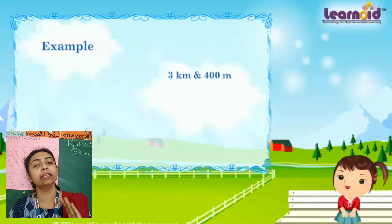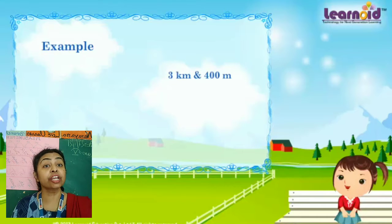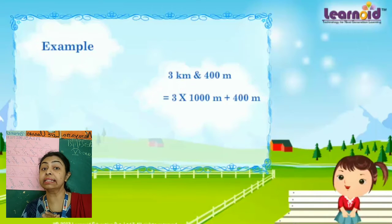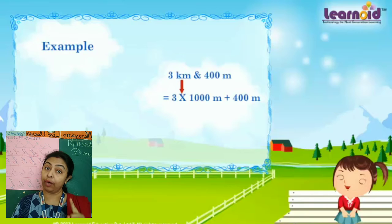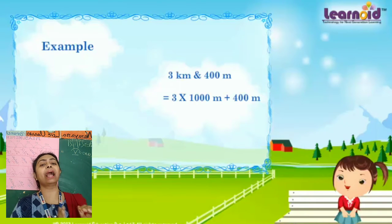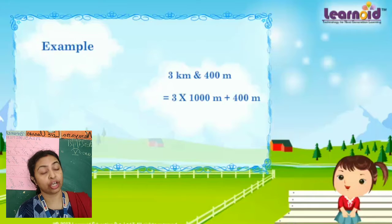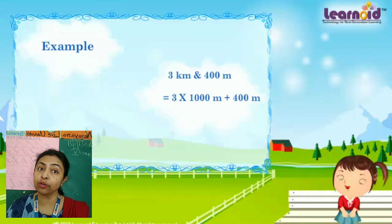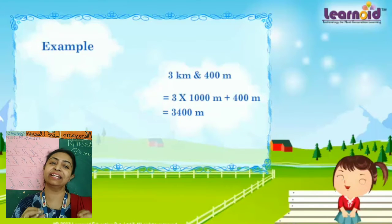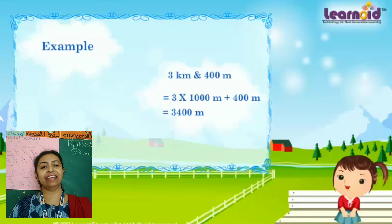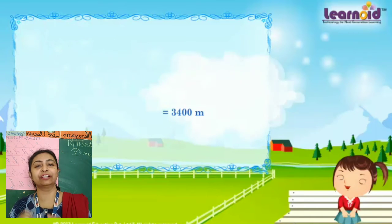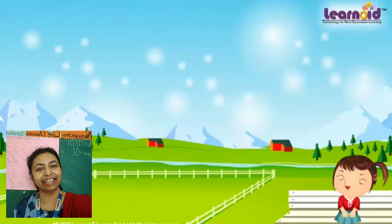Let's do one more example: 3 kilometers and 400 meters. 3 multiplied by 1000 equals 3000 meters, plus 400 meters — so 3400 meters. That is how we measure and convert kilometers to meters. Thank you.